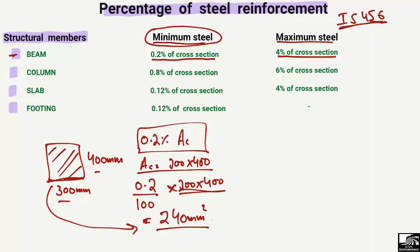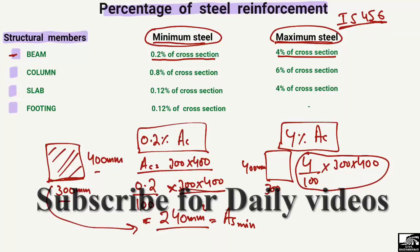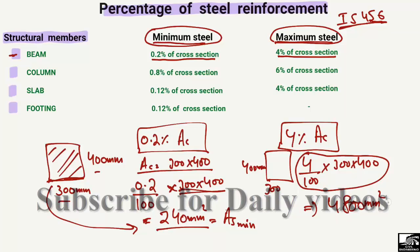Similarly, a maximum range is provided for the steel reinforcement, which should not exceed a certain proportion for ductility reasons — this is 4% of the cross-section. For the same beam of 300 mm × 400 mm, the maximum reinforcement is (4 / 100) × 300 × 400 = 4800 mm².